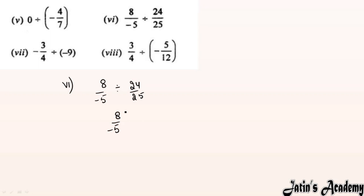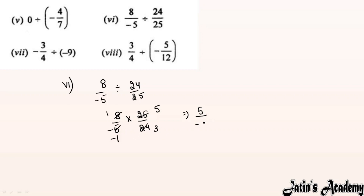For part (vi): 8/minus 5 ÷ 24/25. Keep 8/minus 5, divide converts to multiply, next term takes reciprocal: 25/24. Cancel: 5 goes into 5 and 25; minus stays; 8 and 24 cancel. Answer: 5/3 × minus 1 = minus 5/3, or 5/minus 3.